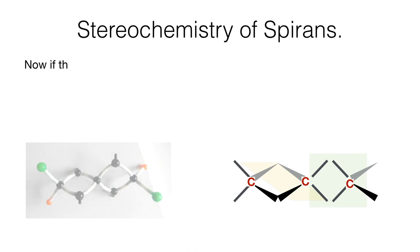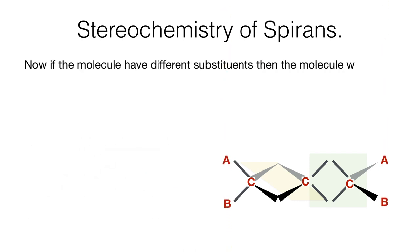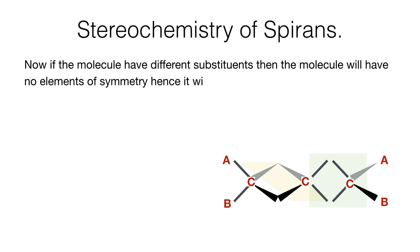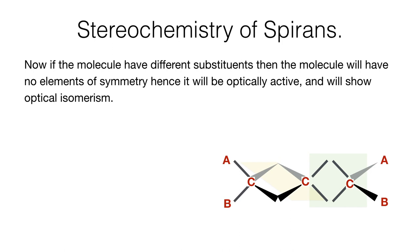Now if the molecules have different substituents, then the molecule will have no element of symmetry, hence it will be optically active and it will show optical isomerism.